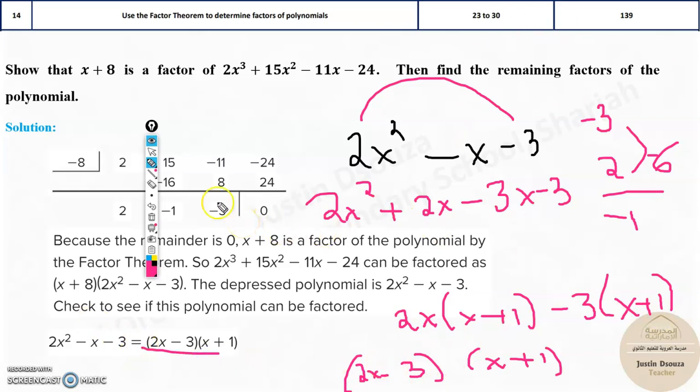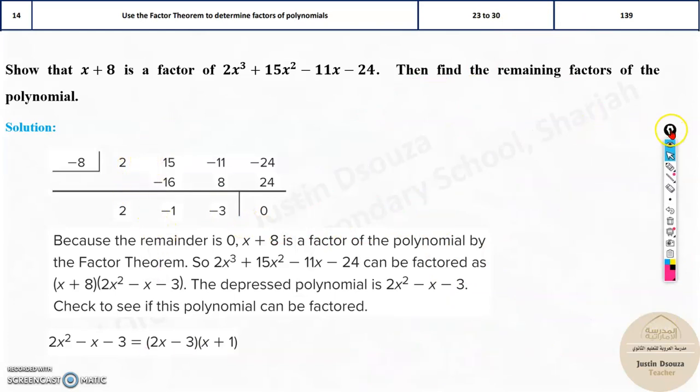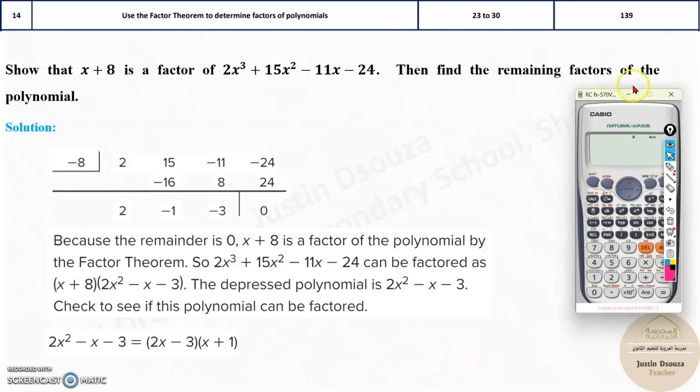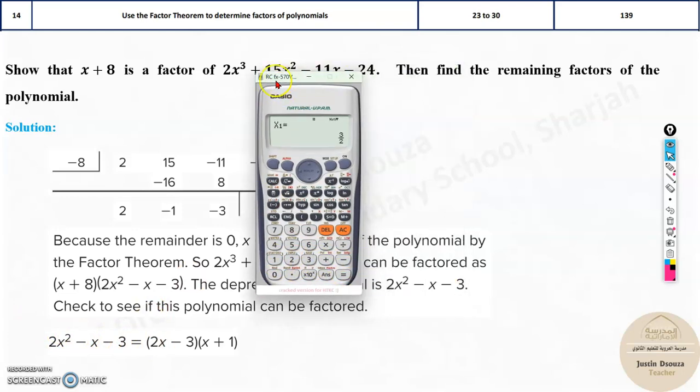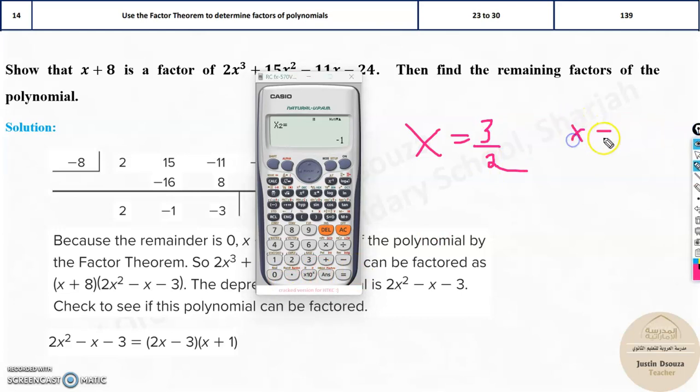But I'm sure this is much confusing and irritating. But I'll tell you another shortcut method for this, the calculator method as usual. So now over here, you need to press mode, 5, and 3. And here, put in the coefficients. It's 2, minus 1, and minus 3. What is the answer you get? You get x is equal to 3 by 2. And then what is another answer? x is equal to minus 1.